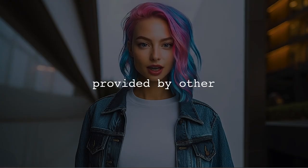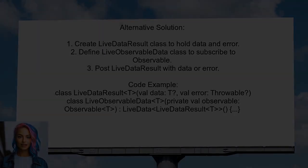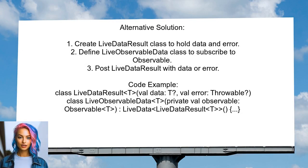Now let's look at the answers provided by other users. One alternative approach involves creating a custom live data class that handles error states. This user defines a LiveDataResult class to hold both data and error information, then creates a LiveObservableData class that subscribes to an observable. When data is received, it posts a LiveDataResult with the data; if an error occurs, it posts a LiveDataResult with the error instead.